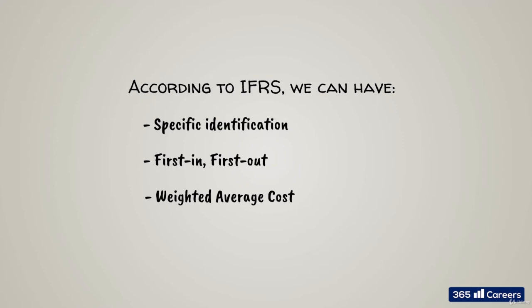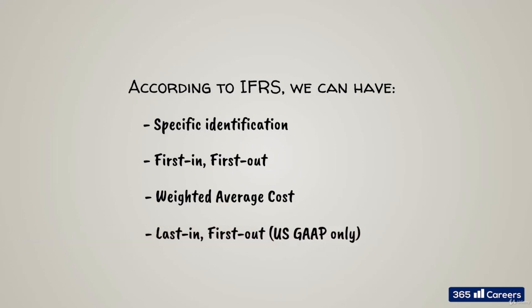The main difference between IFRS and US GAAP is that US GAAP allows a fourth cost flow method: last in, first out. Let's describe each of the four cost flow methods to understand them better.